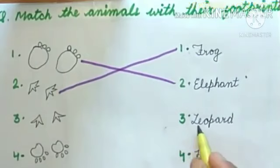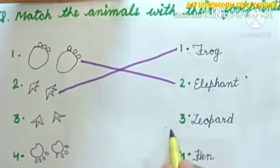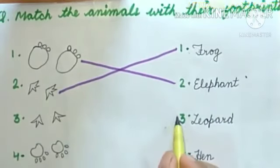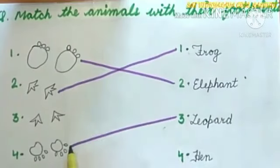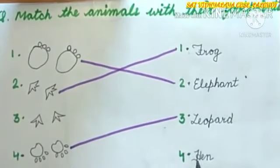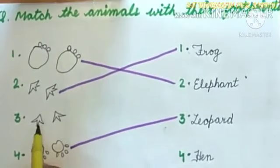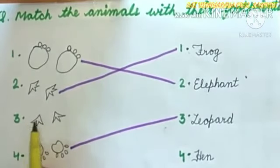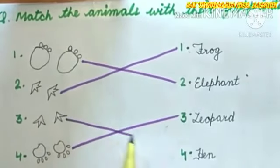Next, we have Leopard. Which one is the footprint of a leopard? This or this? Yes, this is the footprint of a leopard. Last, we have Hen. We have only one is left. So, this is the footprint of a hen. Match this.